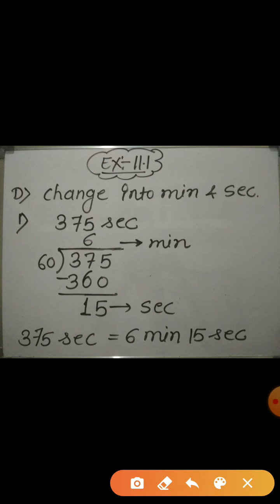As we know that second is the smallest unit and minute is the bigger one, hence to convert the time from second into minute, we have to divide the number of seconds by 60 to change it into minutes.